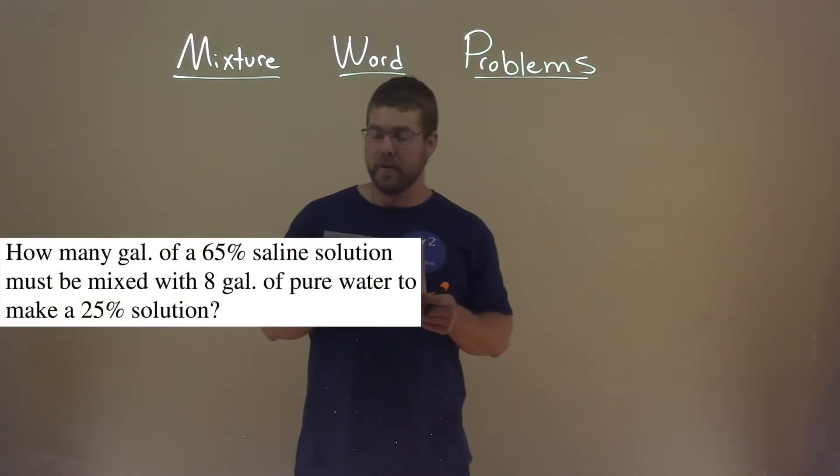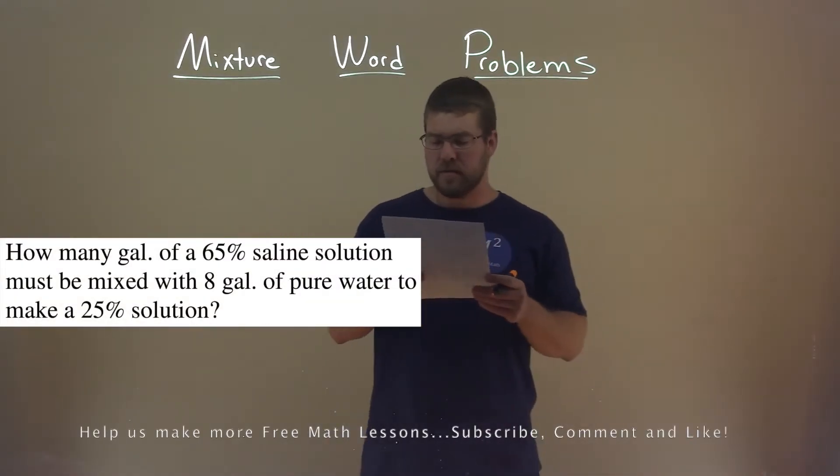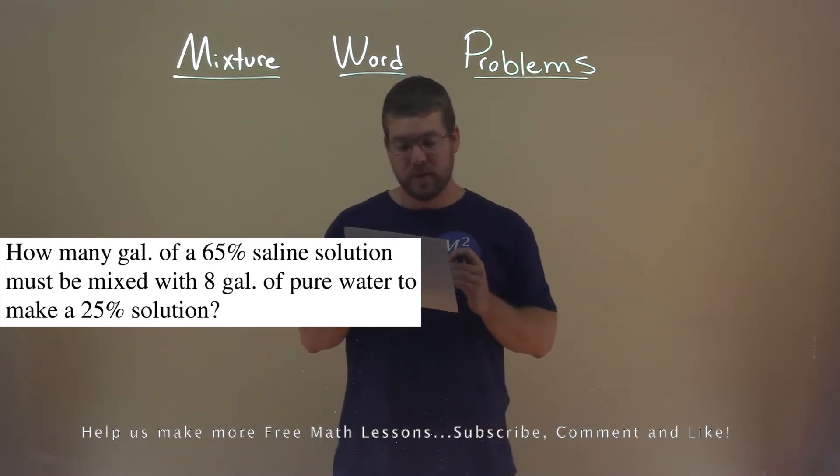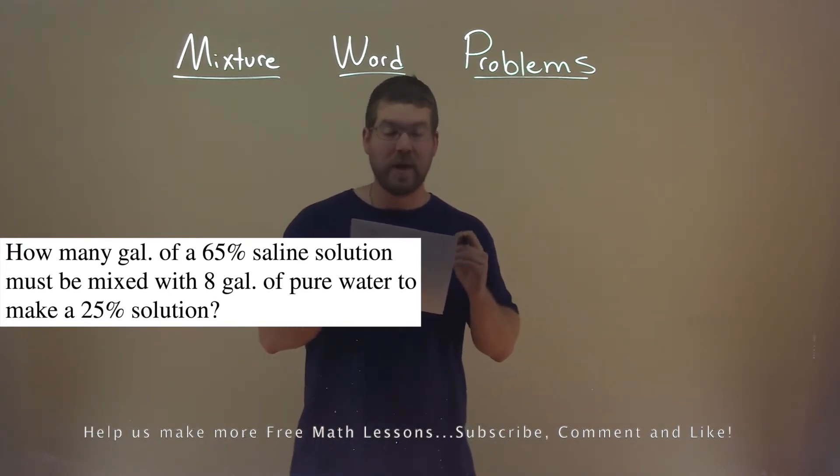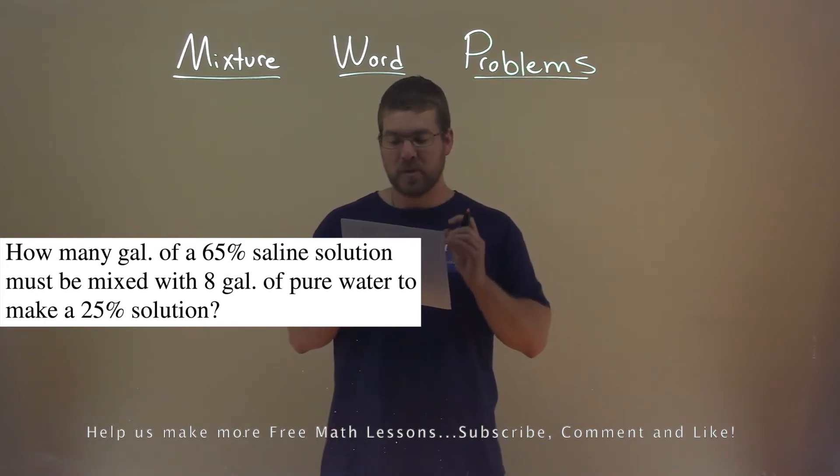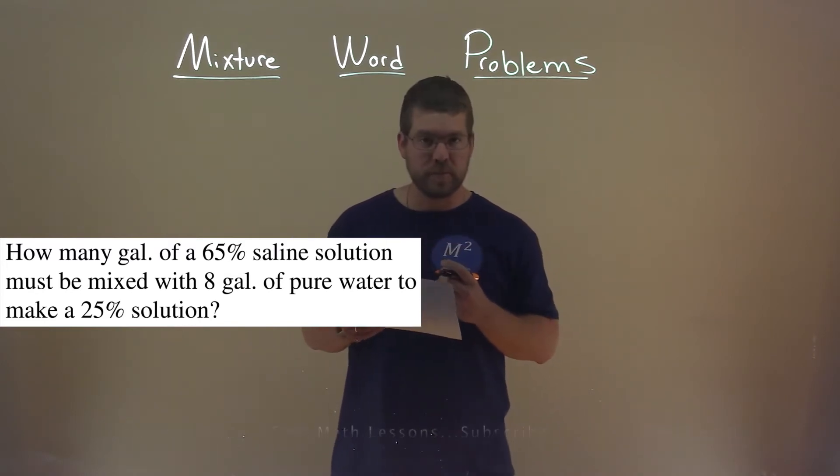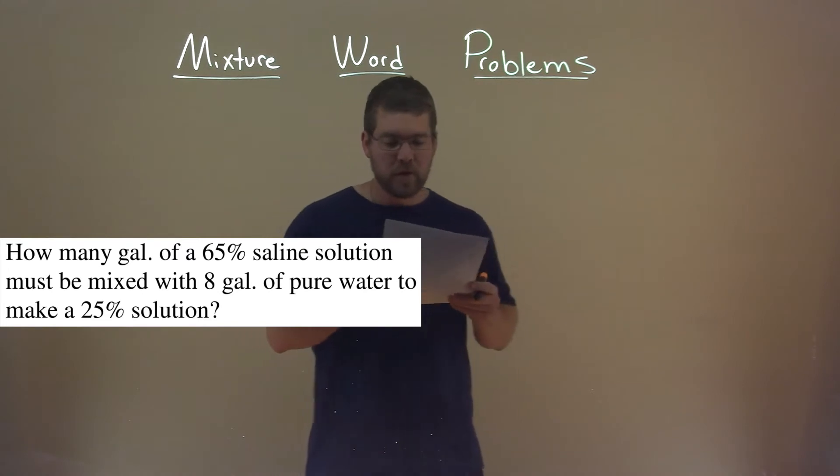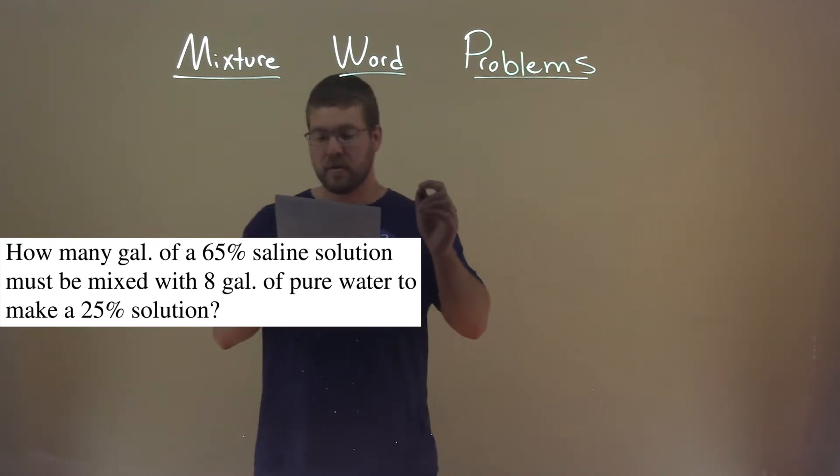We're given this problem right here. How many gallons of a 65% saline solution must be mixed with 8 gallons of pure water to make a 25% solution? So, we don't know how many gallons of a saline solution, let's call that X.